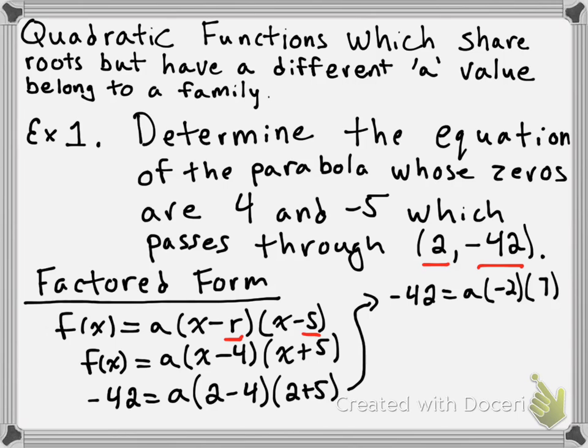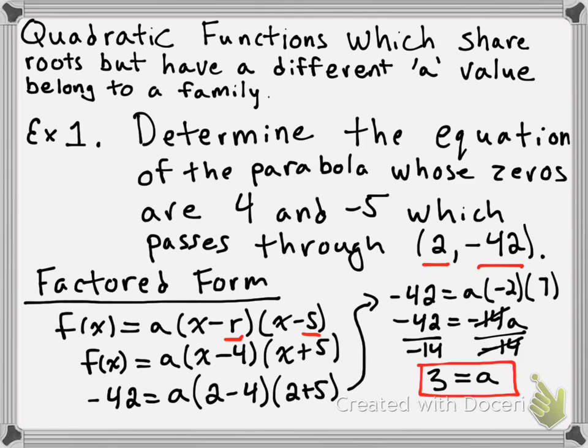And negative 2 times positive 7 is negative 14, so that gives us -42 = -14a. Next, we want to divide out by negative 14 in order to isolate for a, so we divide out by negative 14, and the two negative 14s cancel there. Now, negative 42 divided by negative 14 is positive 3. So what we've actually just determined is the a value of the parabola that we're looking for.